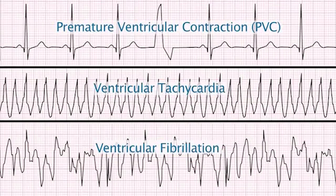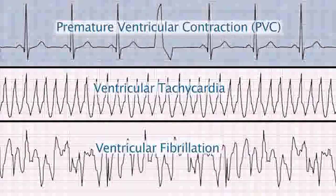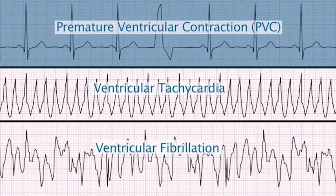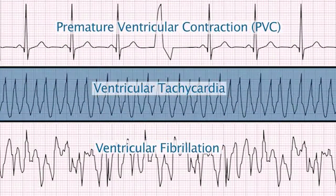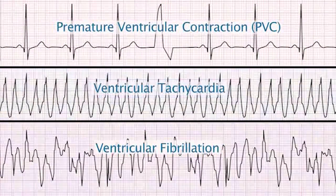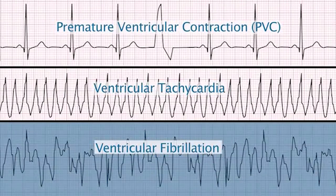Welcome to today's module on Arrhythmias. My name is Christine Lagrasta. I work at Children's Hospital Boston as a pediatric nurse practitioner. Rhythms originating in the ventricle are premature ventricular contraction, ventricular tachycardia, and ventricular fibrillation.